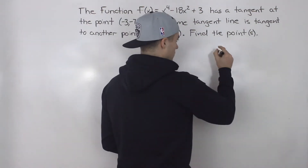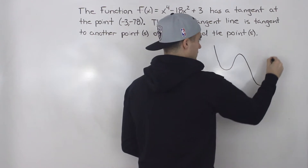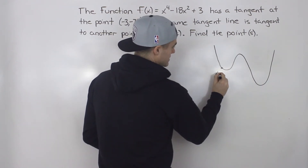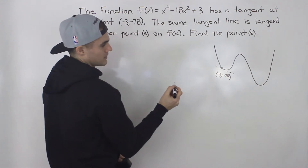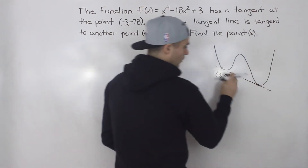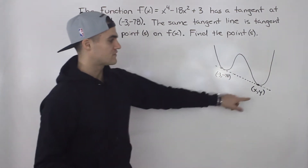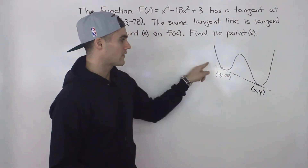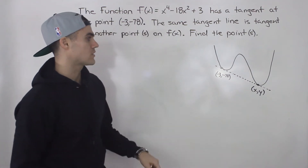To give you a brief visual — let's say this function looks something like this. Let's say that this point here is (-3, -78) and it has some kind of tangent like that. What they're saying is that there's another point, or multiple points, on the function where that same tangent line is also tangent. Let's say this other point is just (x, y) and we have to find it. There might actually be multiple points.